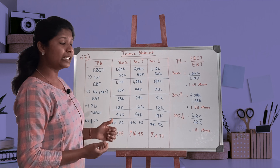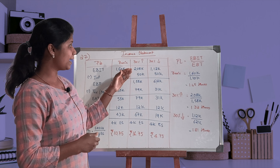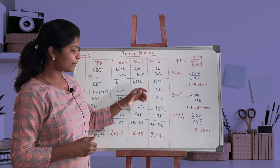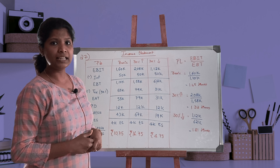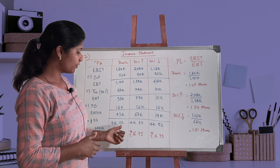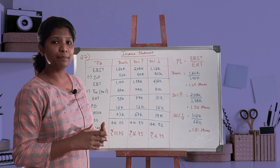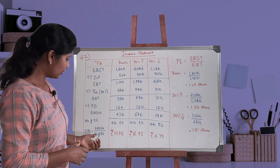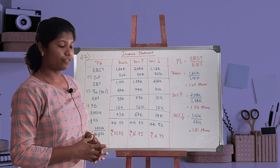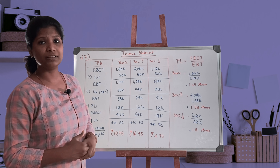We carry forward earnings available to equity shareholders. For the basic EBIT scenario, earnings are 43,000; when EBIT increases to 2,08,000, earnings are 67,000; and when EBIT decreases by 30%, earnings are 19,000 rupees. Number of equity shares from working note one is 4,000 shares. Dividing by 4,000, EPS comes to 10.75, 16.75, and 4.75 rupees respectively.